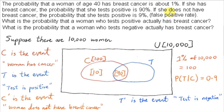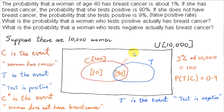We are given that if she does not have breast cancer, the probability that she tests positive is 9%. Let C' be the event that the woman does not have breast cancer. The events C and C' are related: either she has cancer (event C) or she does not (event C'). So C' is the complement of set C — everything outside of set C.